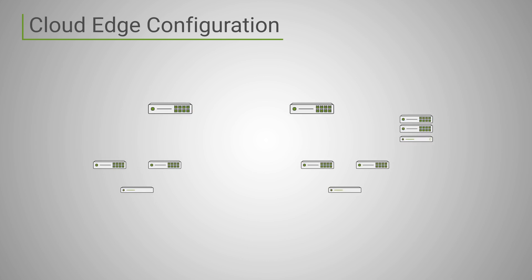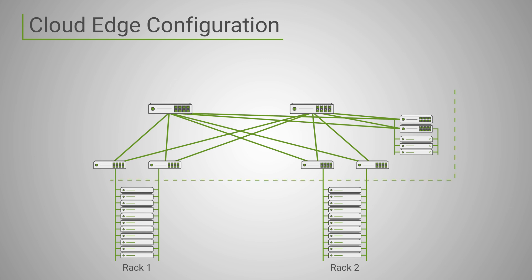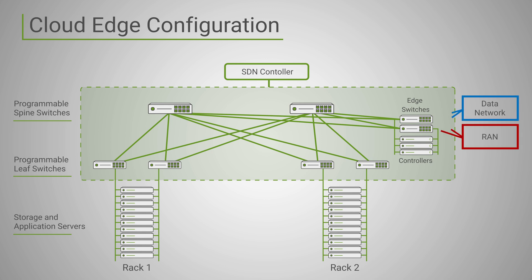As a complementary solution to the existing Colum software-defined fabric — which is more suited for large-scale data centers — the Cloud Edge Fabric is the first fully automated data center networking fabric that provides native support for network slicing with an embedded 5G user plane function. The Cloud Edge configuration is comprised of the Cloud Edge Fabric that sits in between and interconnects with the interfaces of the radio access network and the data network.